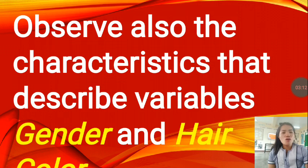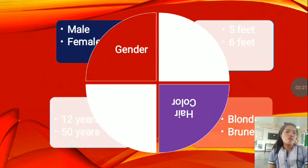And I want you also to observe the characteristics that describe variables for gender and hair color. Take a look at that. Remember, for the gender you have male and female, and the hair color, you have blonde and brunette.